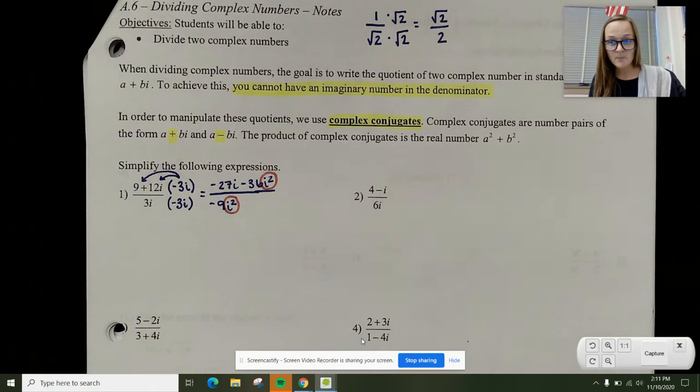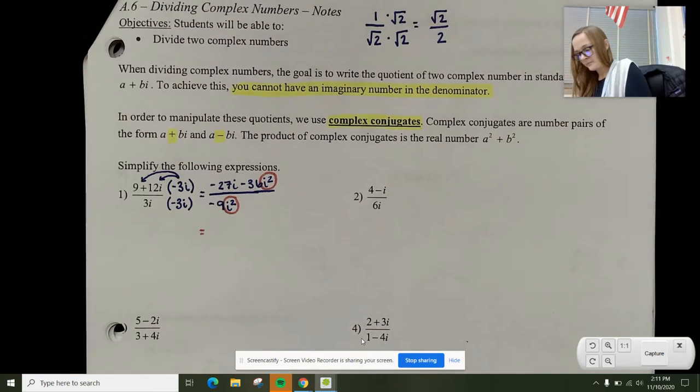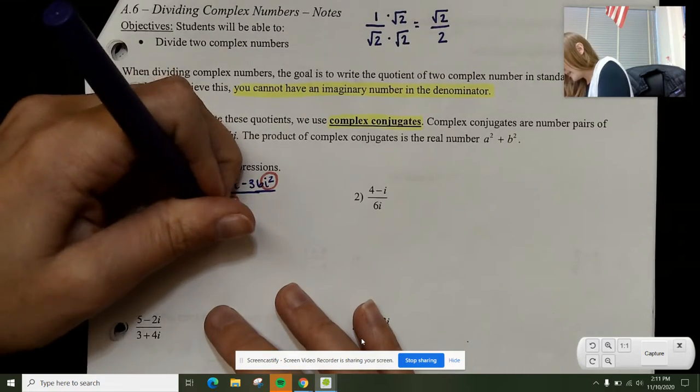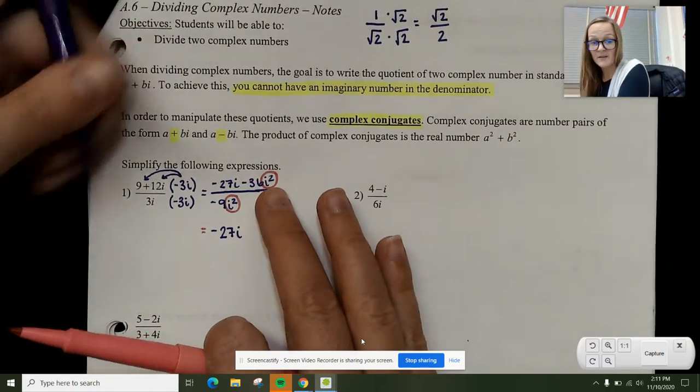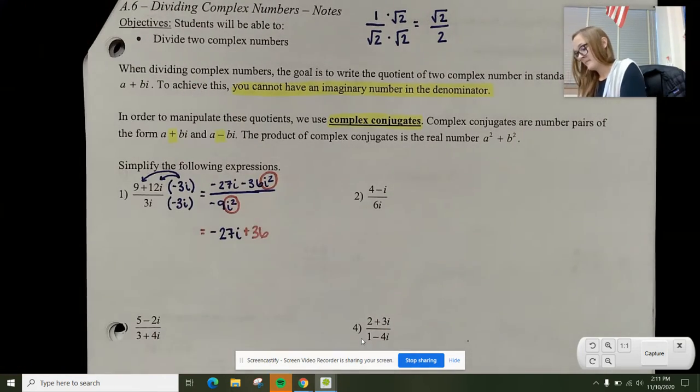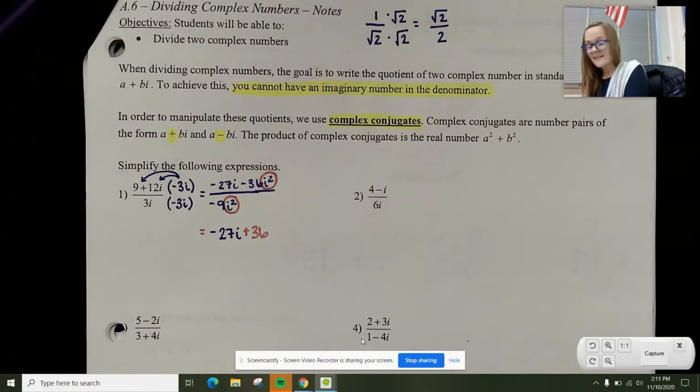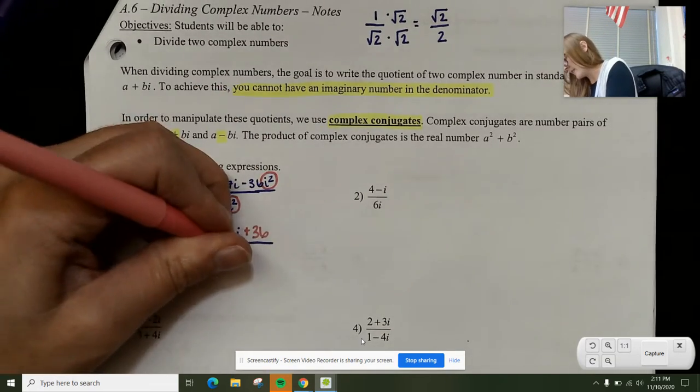When I'm simplifying, I need to fix this. This turns into negative 27i doesn't change, but negative 36 times negative 1 turns this into plus 36. And negative 9 times negative 1 turns that bottom into positive 9.